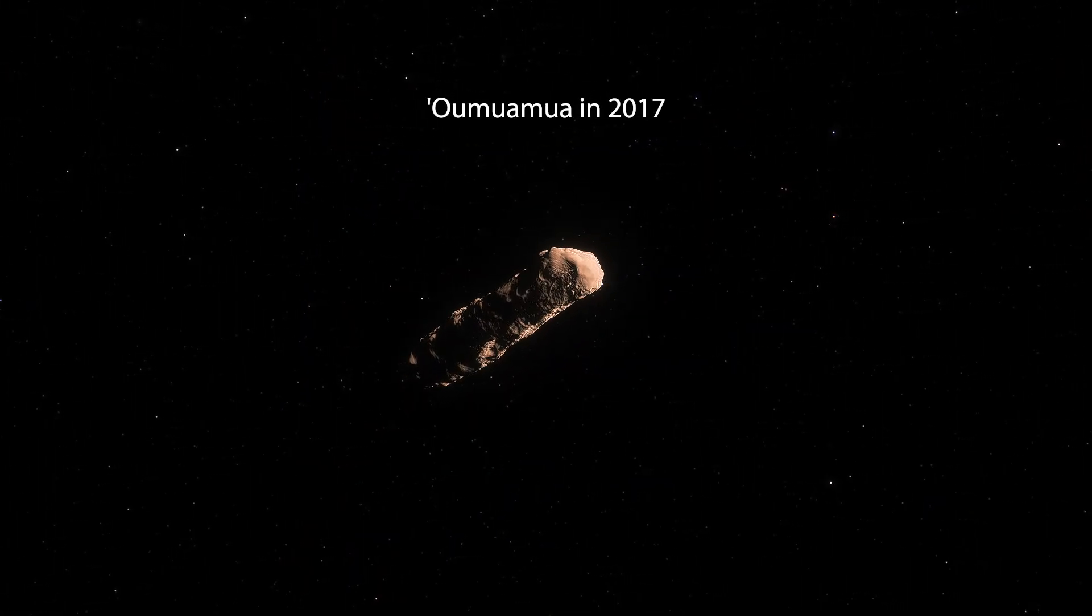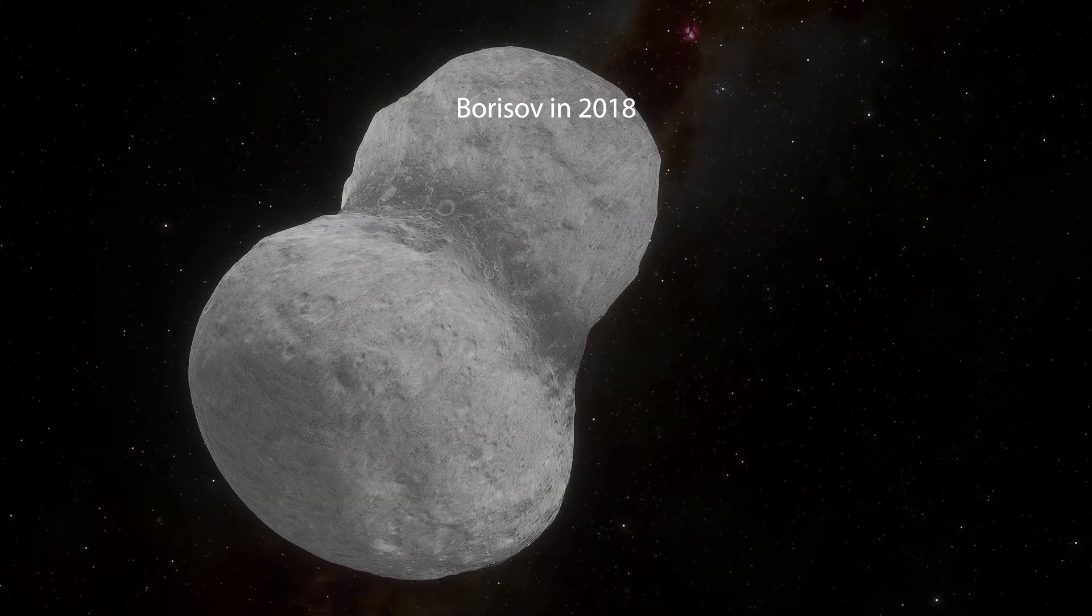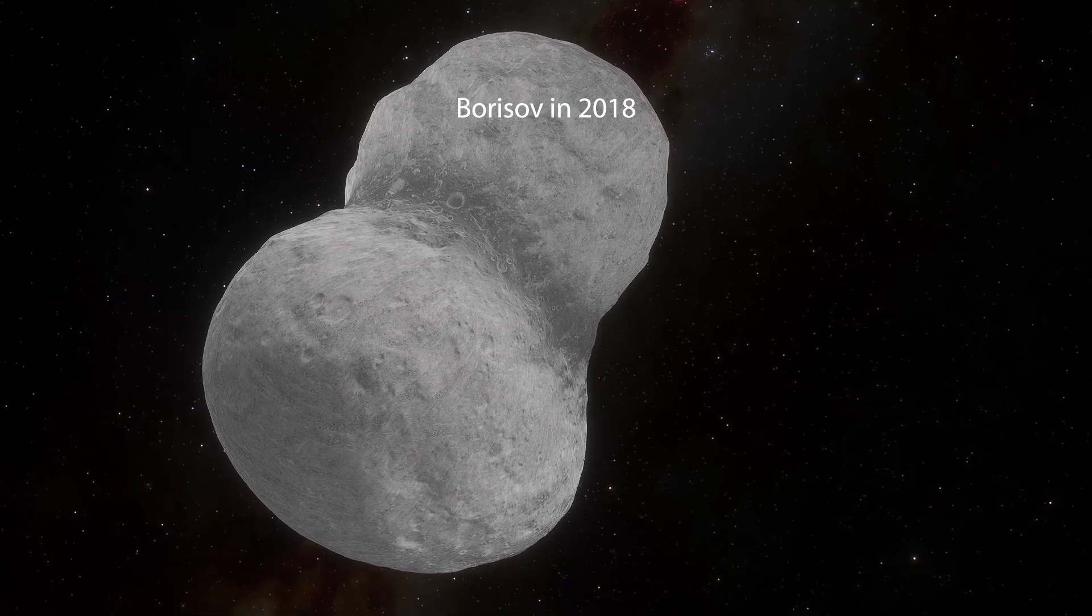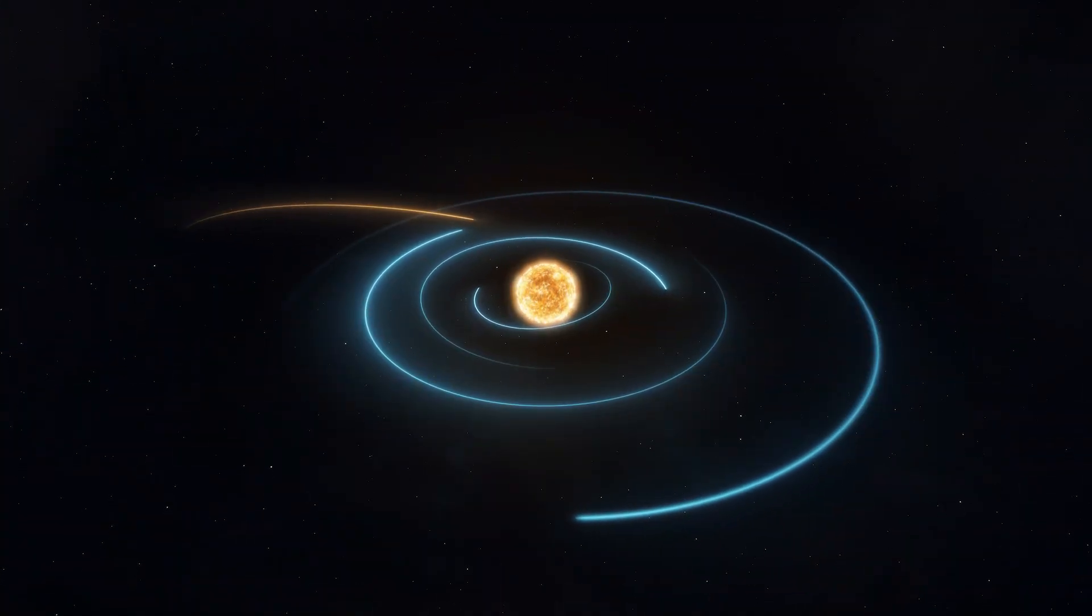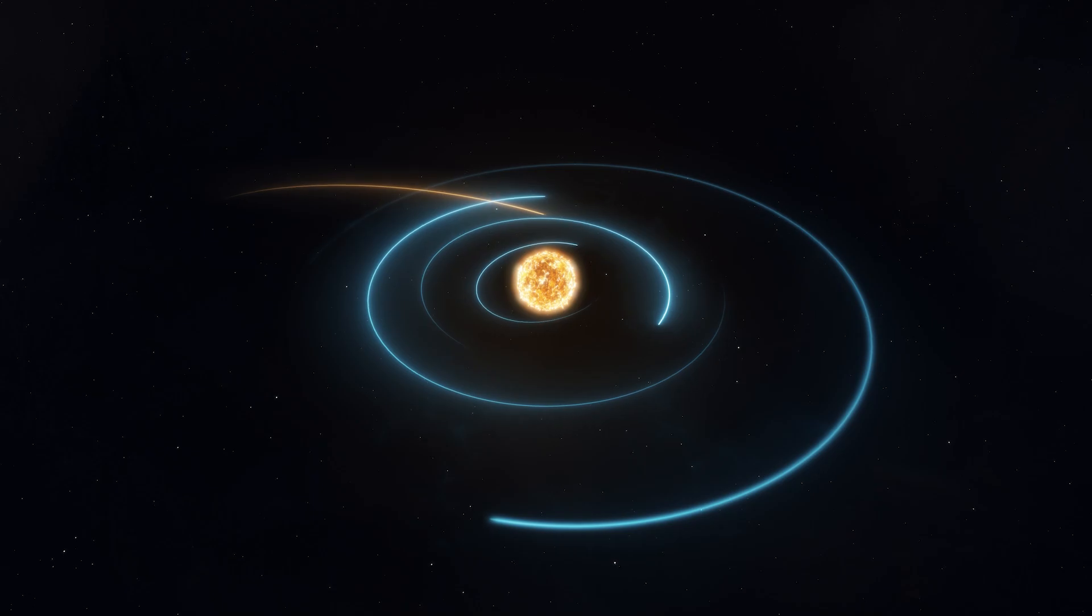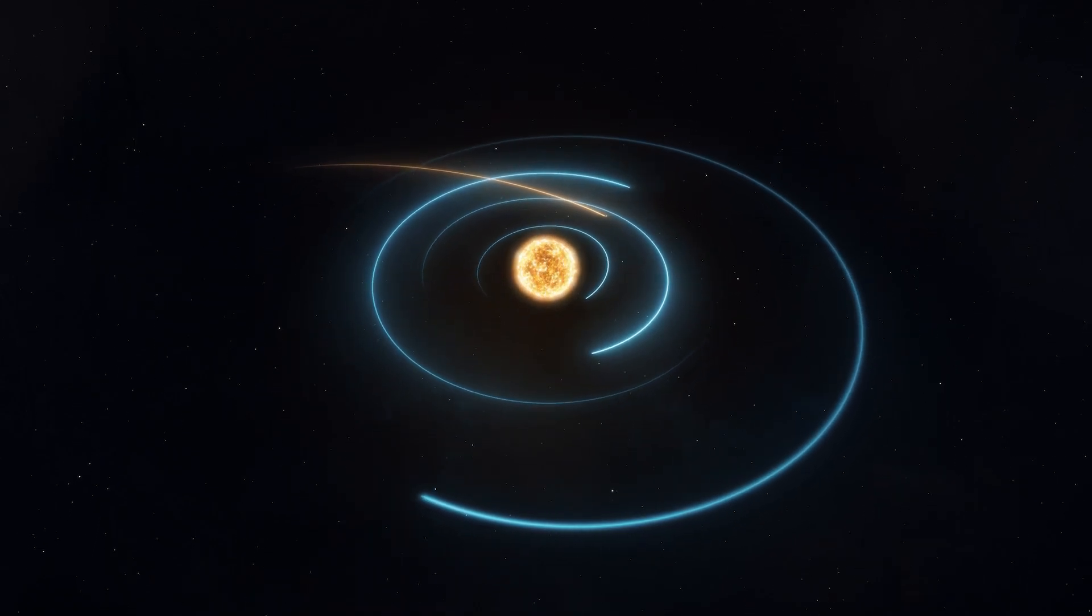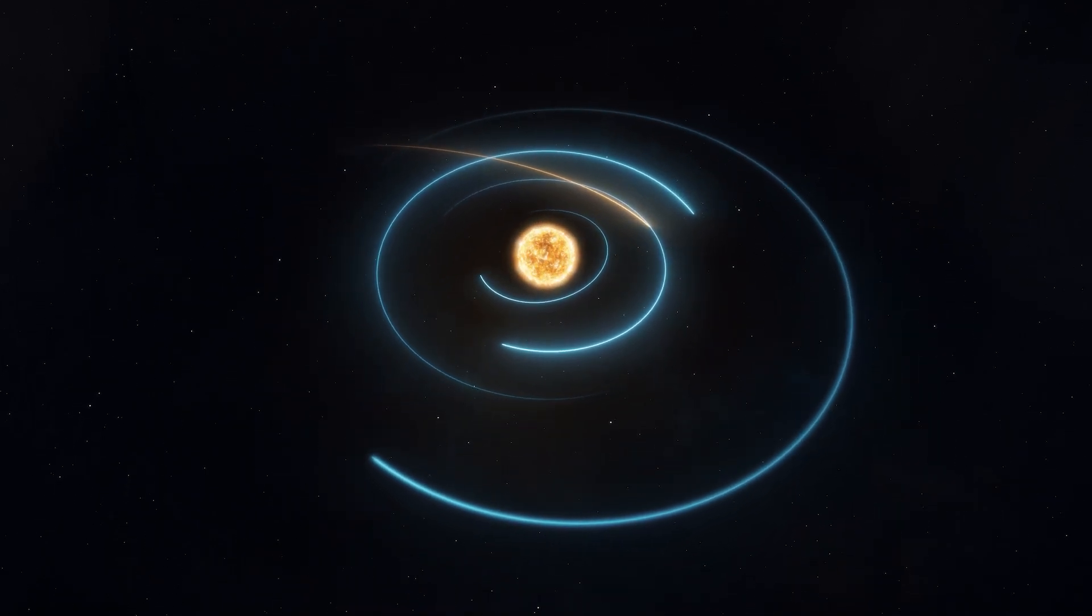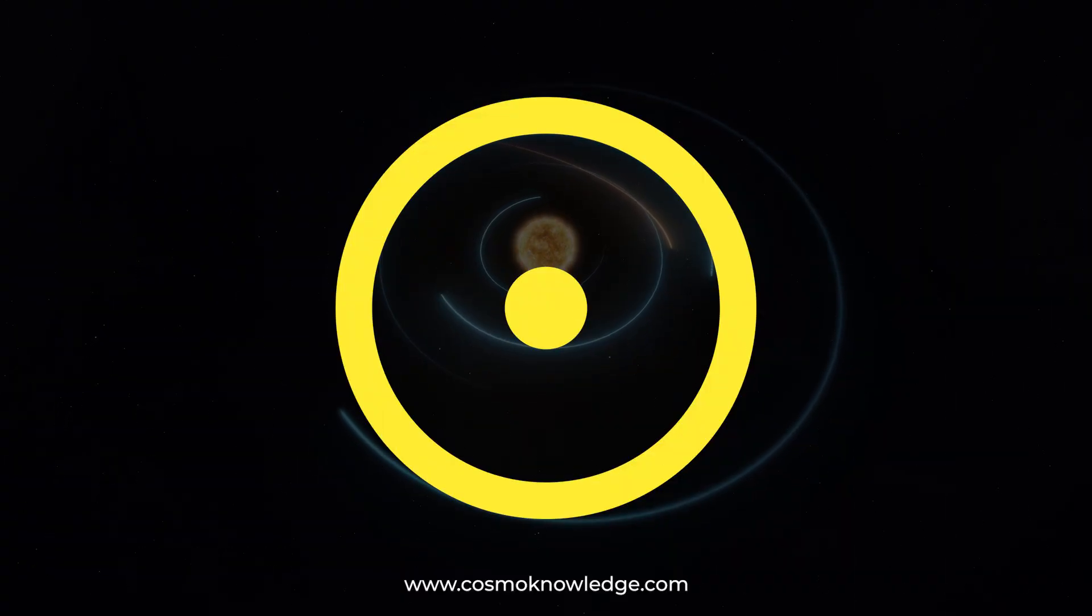There was Oumuamua in 2017 and Borisov in 2018, but many more are believed to exist. However, because these objects appear unpredictable, scientists must rush to collect as many observations as possible during the short period they're close enough to investigate.